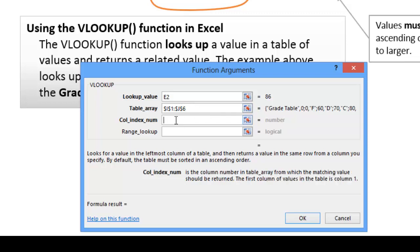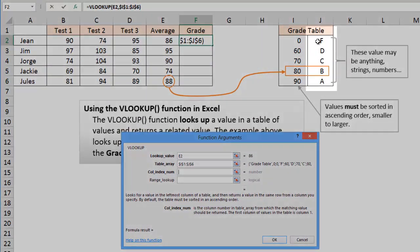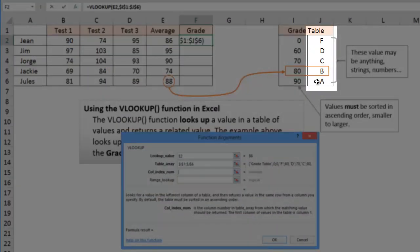The next input we need to give the VLOOKUP is the column number in the table. And they tell you very clearly here that the first column of values in the table is column one. So our first column of numbers is column one. And so this second column where the grades are is column two. So we need to just enter two.